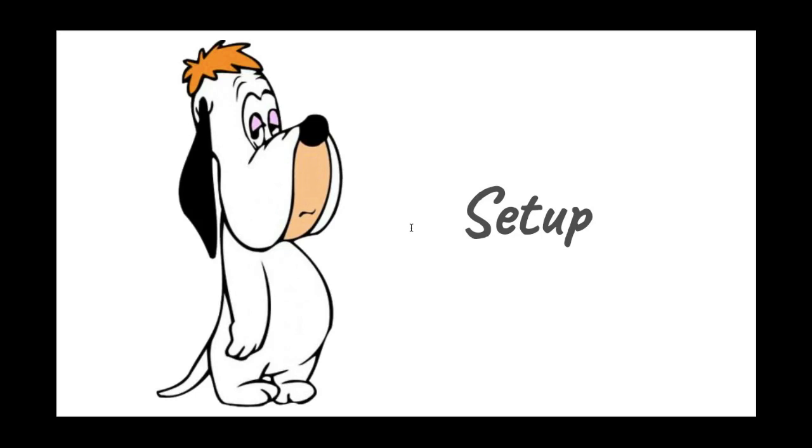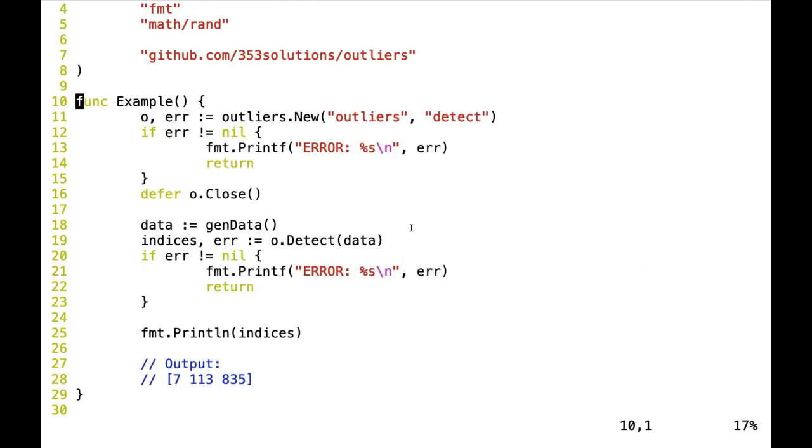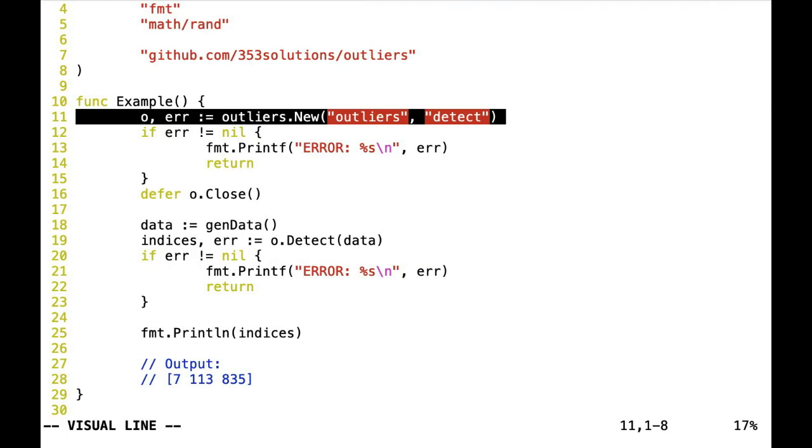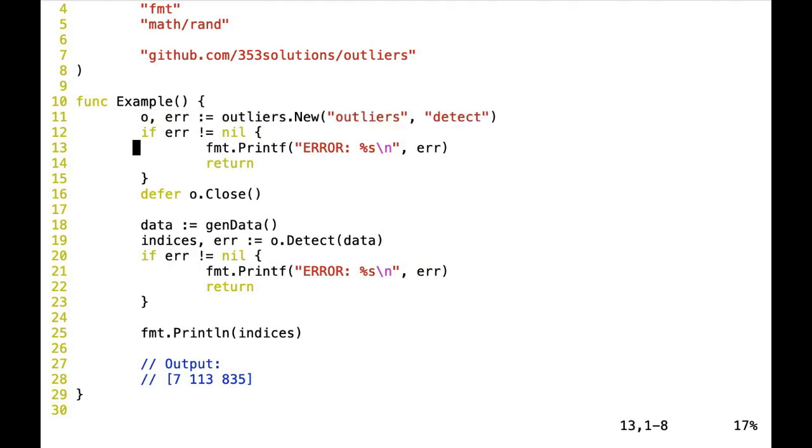So let's have a look. Here's an example code. We'll start by creating a new outlier object, which uses the code from the outlier Python module and the detect function inside it. We're going to defer the closing of this object. Then we're going to get some data, pass it along to the detect method, and get back the indices of the outliers, if there are any. And finally, we're going to print them out.